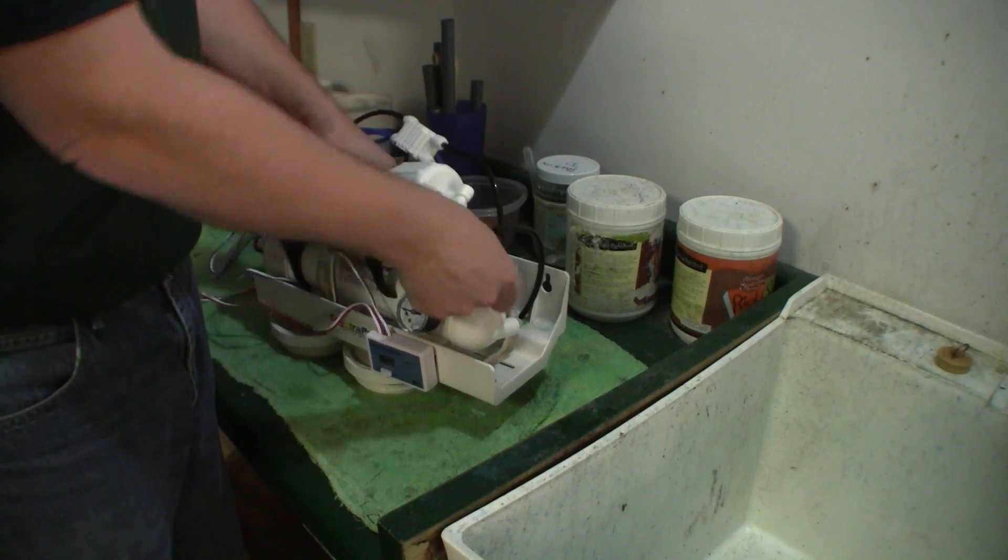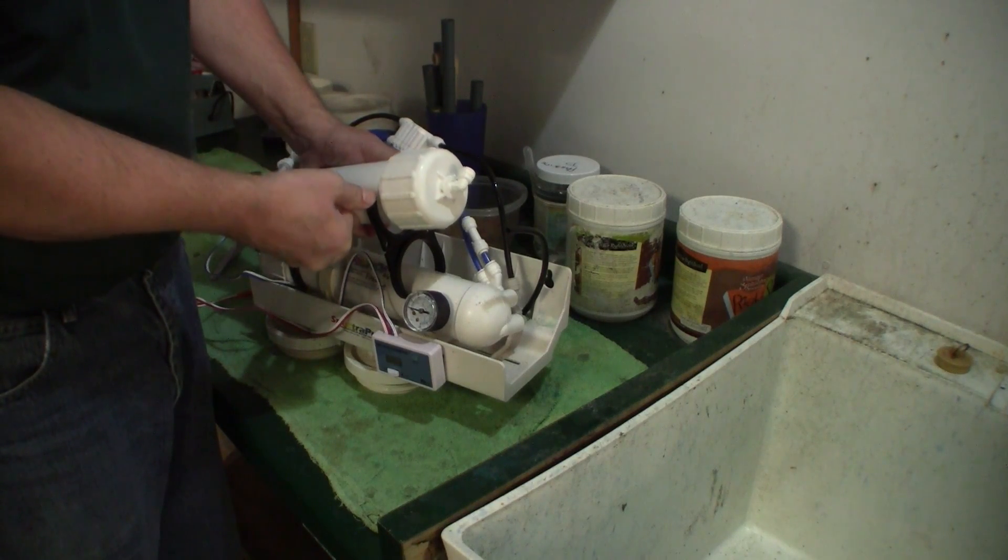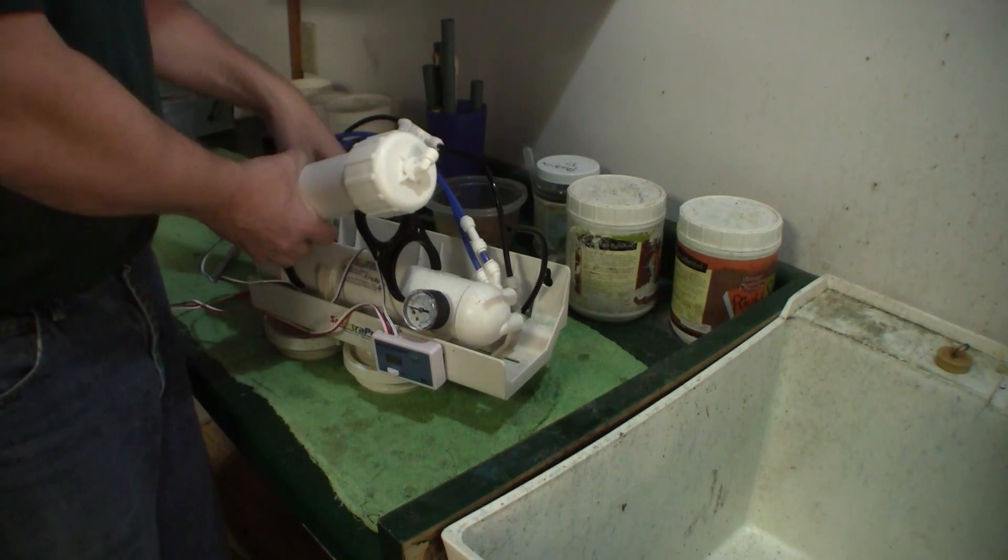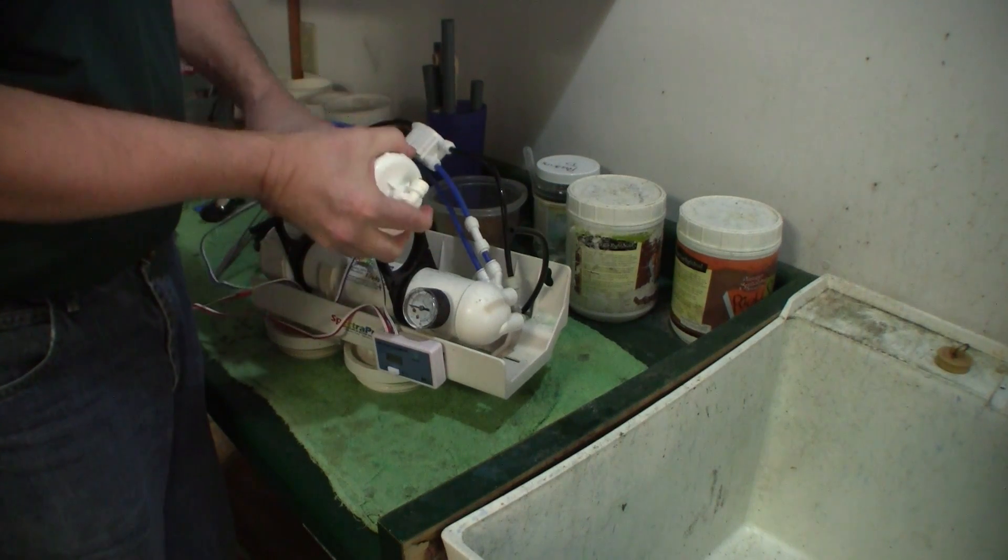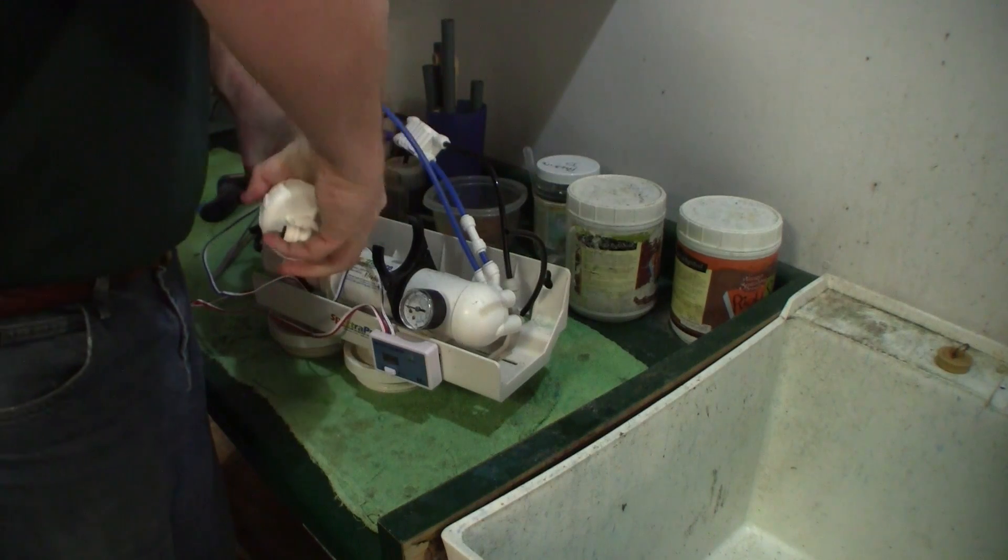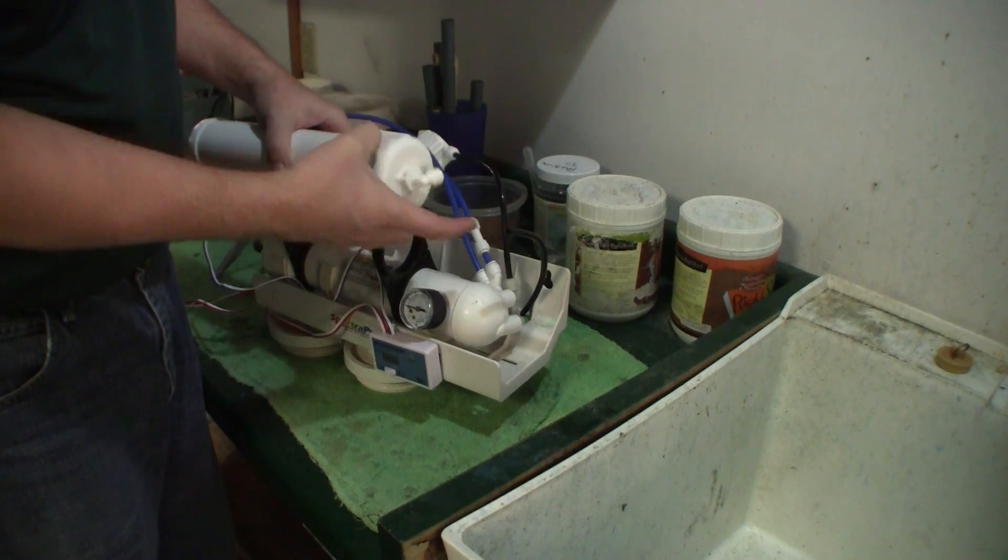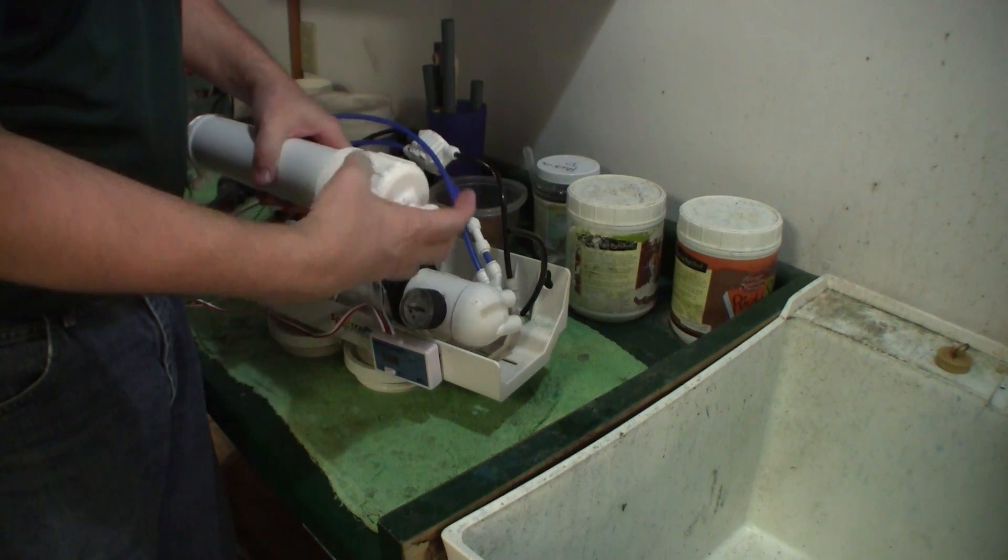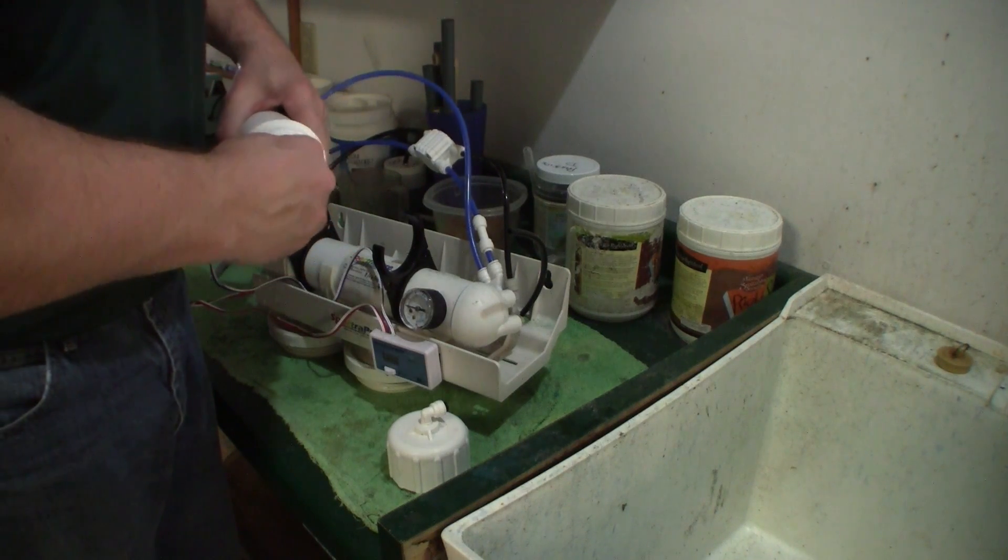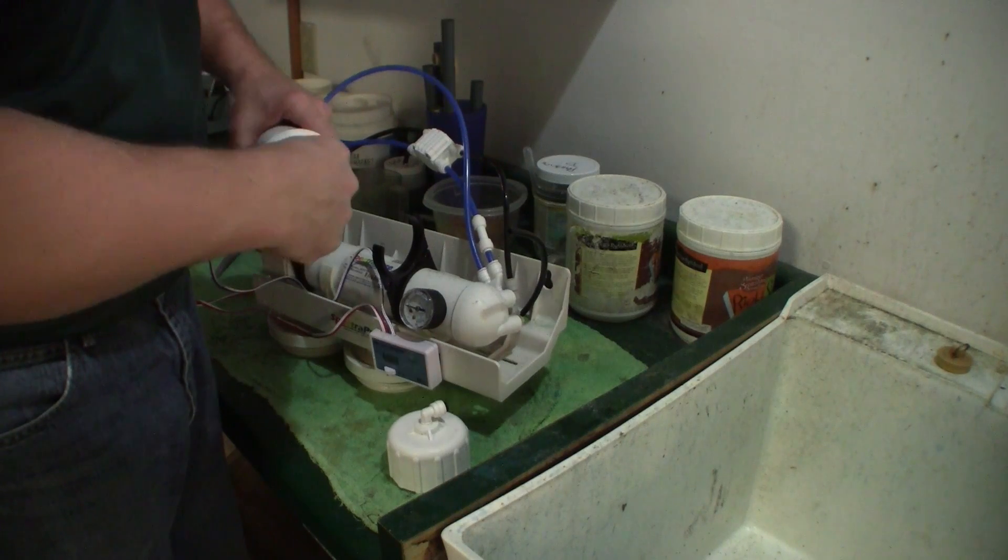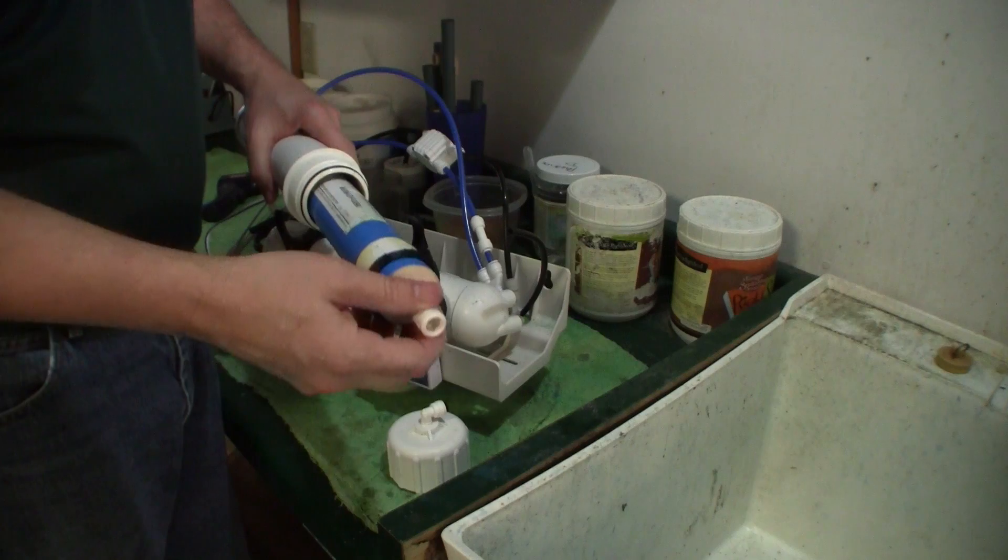I usually unhook them all but for this demonstration I'm just going to unhook that one. Pull the tube off, pull the casing off of the unit and then unscrew this. Your membrane is going to be seated down inside here. You probably need a pair of pliers, if it's an old membrane, to pull that out.